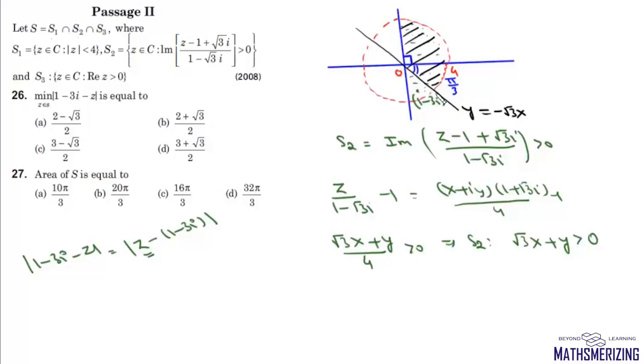This point is 1 - 3i. Now we need to find the minimum distance between this point and all the points in this region. We know that the point which is closest to this point will be this perpendicular on this line, which is √3x + y. So we have to find this minimum distance, and for that we need to find this perpendicular distance.